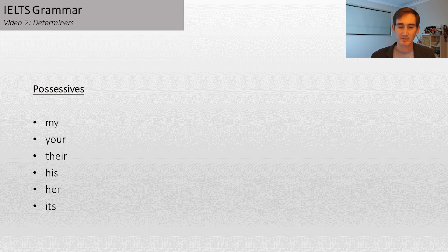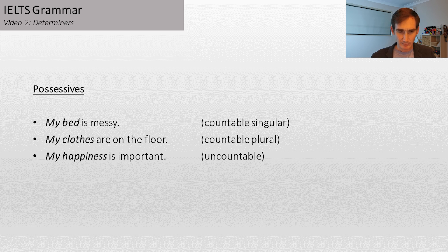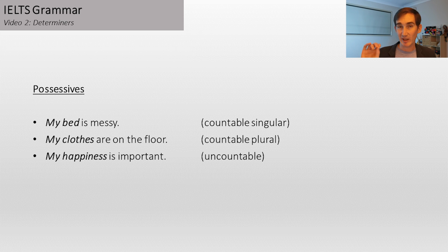So that's the basics of articles. Let's get onto the second kind of determiner — possessives. Examples: my, your, their, his, her, its. You're probably familiar with these words. They're technically determiners as well. On the screen there are some examples: 'My bed is messy. My clothes are on the floor. My happiness is important.' — going with every kind of noun: countable singular, countable plural, and uncountable. So possessives go with all of those.